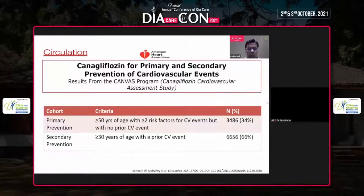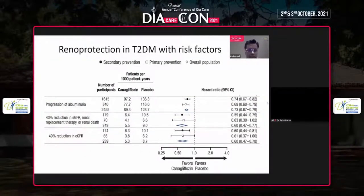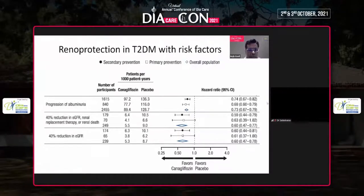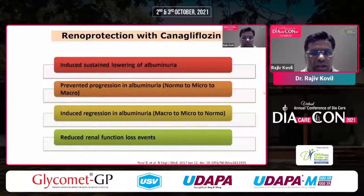Looking at data from the CANVAS program, which had one-third of patients with prior CV events or established cardiovascular disease, canagliflozin was studied for primary and secondary prevention of cardiovascular events. The secondary renal endpoints all favored canagliflozin — whether it was progression of albuminuria, 40% reduction in eGFR, or 40% reduction in eGFR in patients with established cardiovascular disease. Renal protection with canagliflozin is due to induced sustained lowering of albuminuria, preventing progression and causing regression in albuminuria, and producing reduced renal function loss.